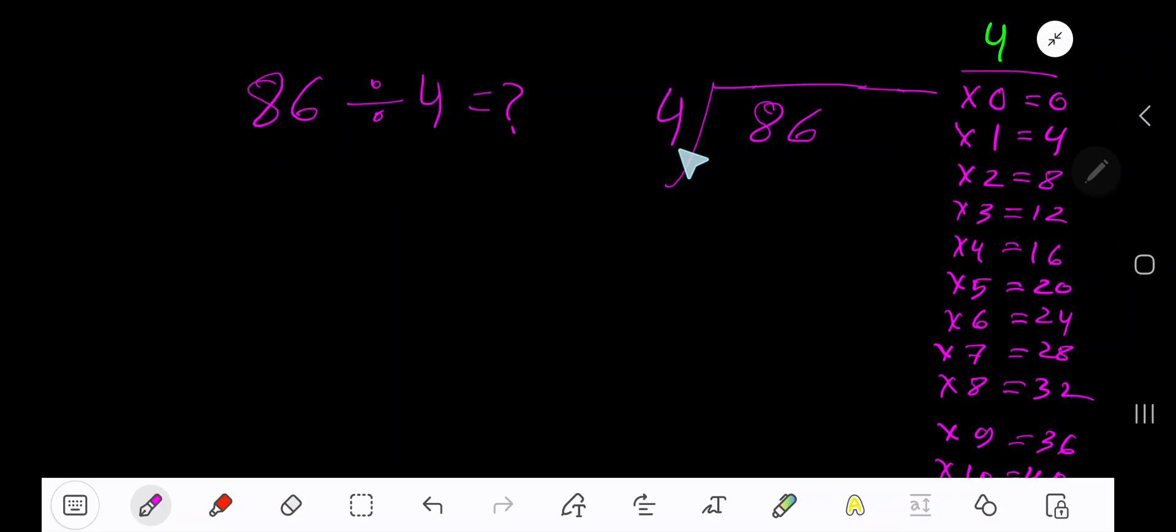86 divided by 4. Here 4 is a divisor so we need the multiplication table of 4.